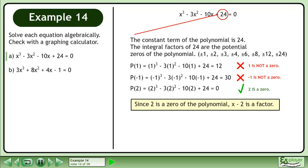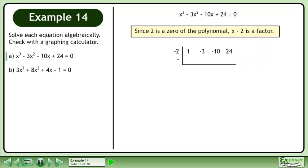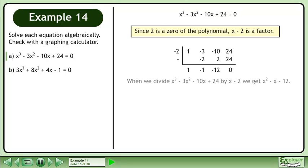Since 2 is a zero of the polynomial, x minus 2 is a factor. Set up the synthetic division and complete it. When we divide x cubed minus 3x squared minus 10x plus 24 by x minus 2, we get x squared minus x minus 12.